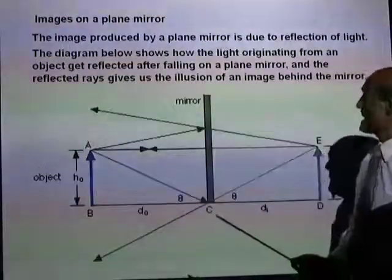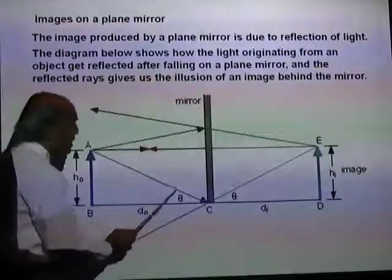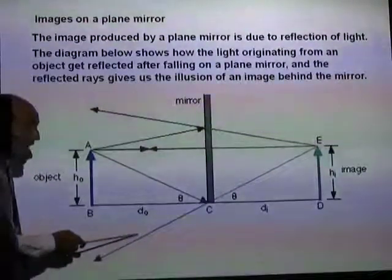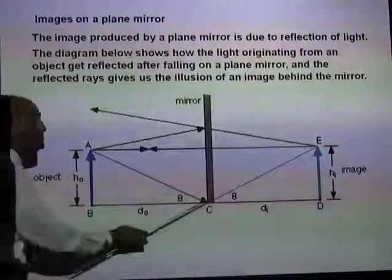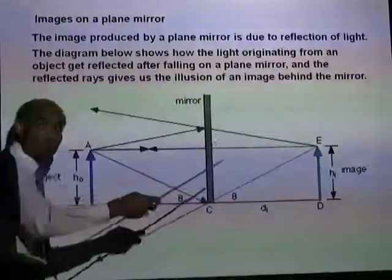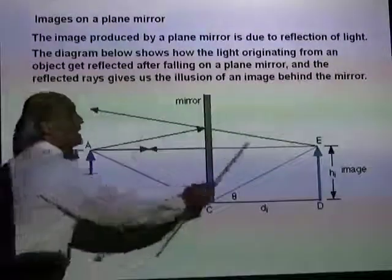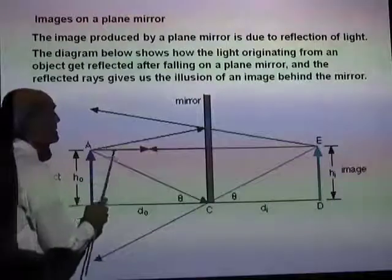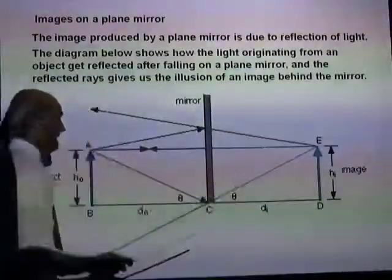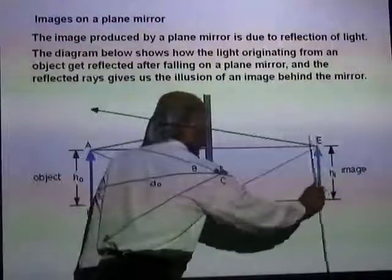This diagram shows how an image is formed. You can see an object kept in front of a plain mirror. An incident ray on the mirror gets reflected according to the law of reflection. If you look from here, this ray will not appear to be coming from here — it will appear to be coming from somewhere behind the mirror, because light travels in straight lines. So you see the image of point A at point E. Similarly, a ray striking the mirror here gets reflected that way, and you can construct the images of all points describing this object.